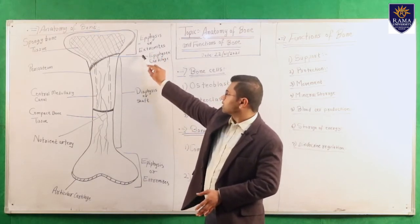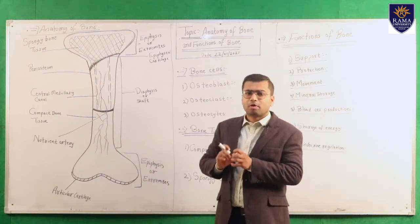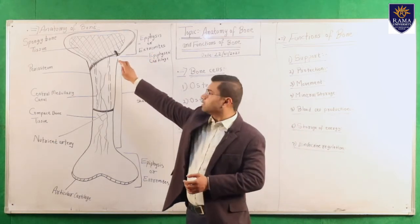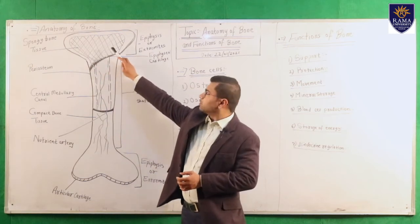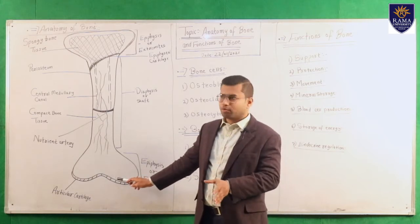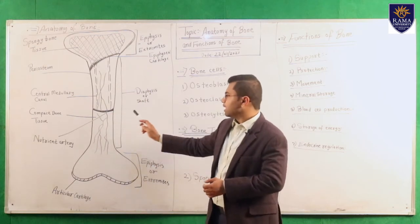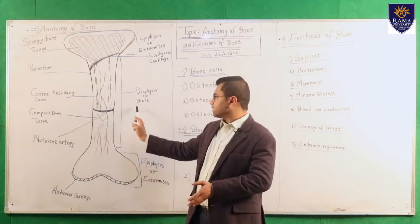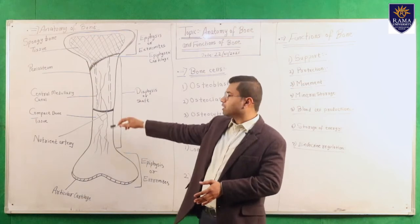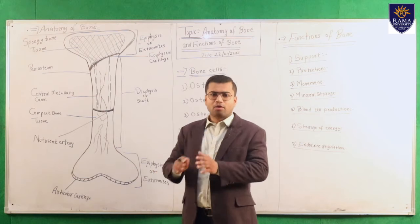The epiphysis — both upper and lower extremities — consists of spongy bone tissue, which is somewhat spongy and lighter in nature. The diaphysis, the long central portion of the bone, consists of compact bone tissue, which is hard in nature and constitutes 80% of the bone.